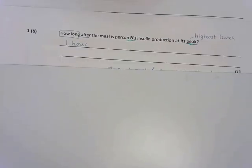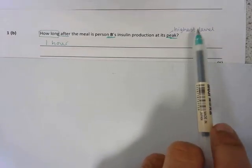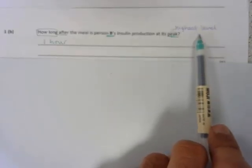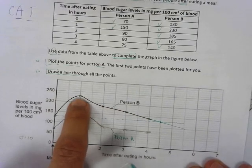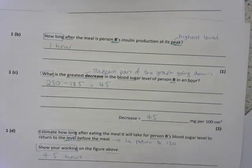Question 1b, how long after the meal is person B's insulin production at its peak? So when will insulin be produced at the highest level? Now insulin is produced at the highest level when the blood glucose reaches the highest level. So where does blood glucose reach the highest level for person B? Well it's here, and that is at one hour after the meal. So your answer is one hour after the meal.